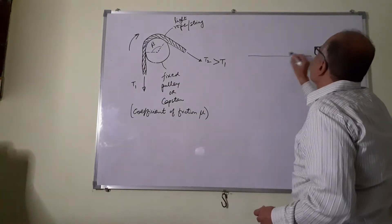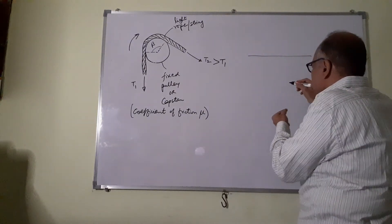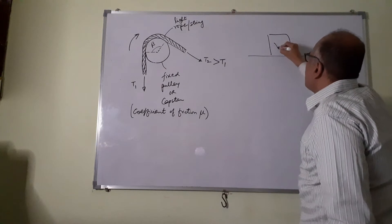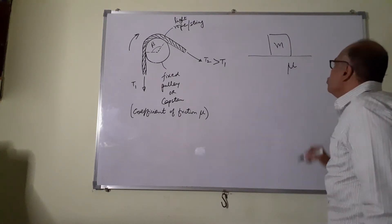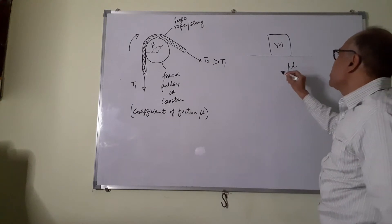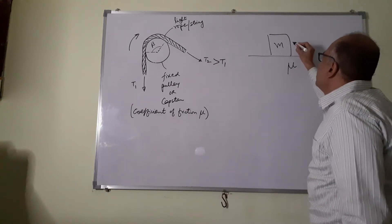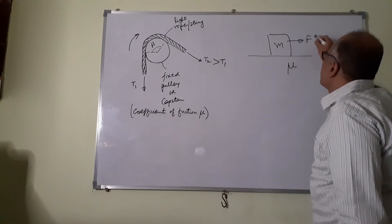Let's say we have a surface, a rough surface, and we have a block of mass M. The coefficient of friction is mu here.